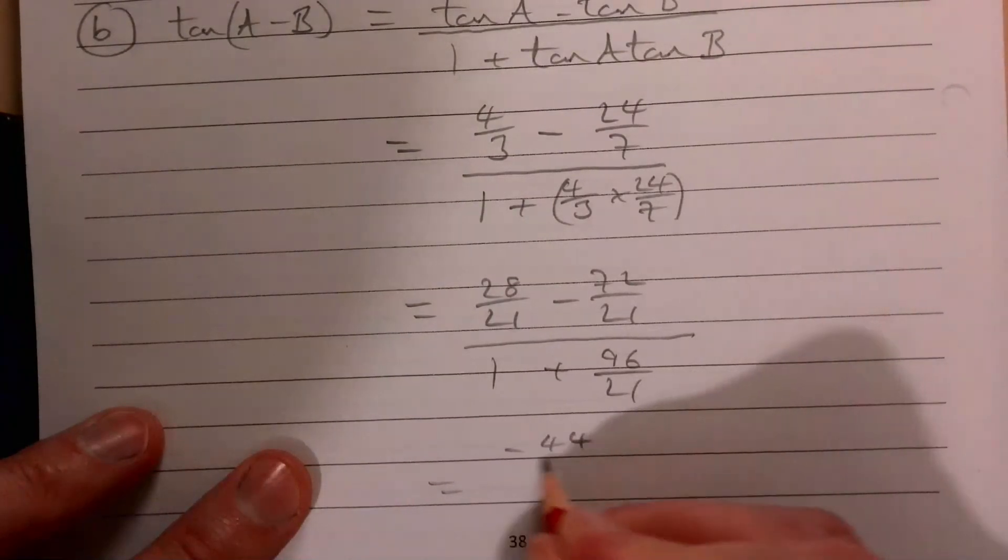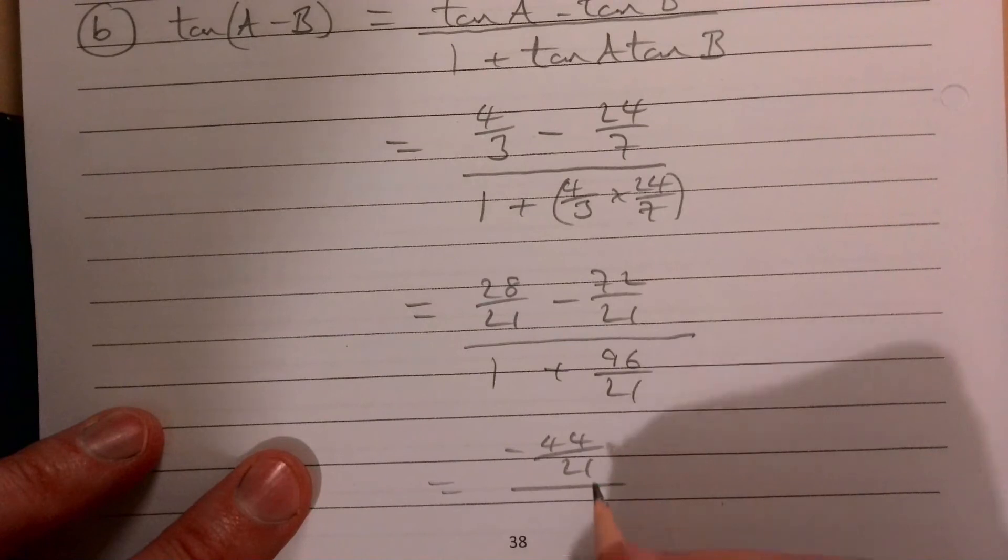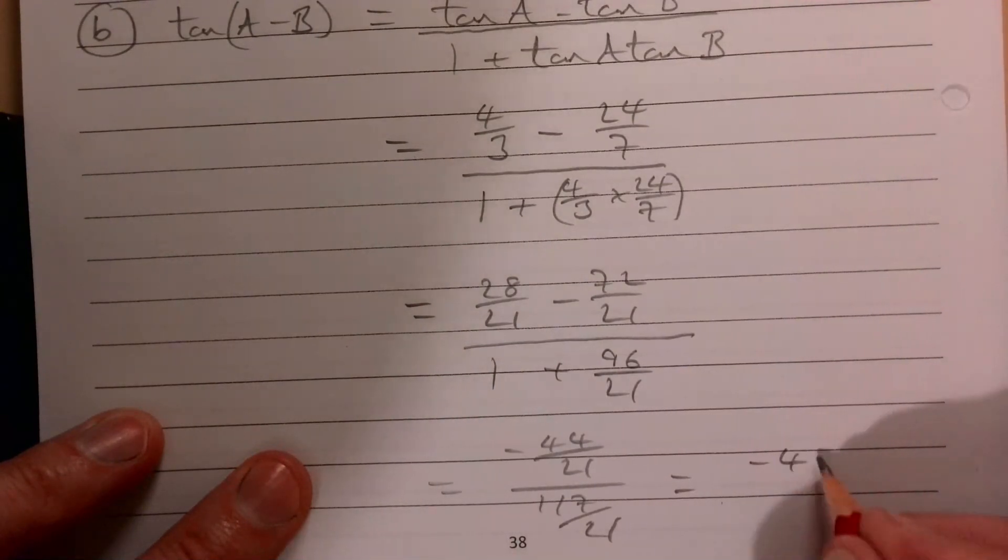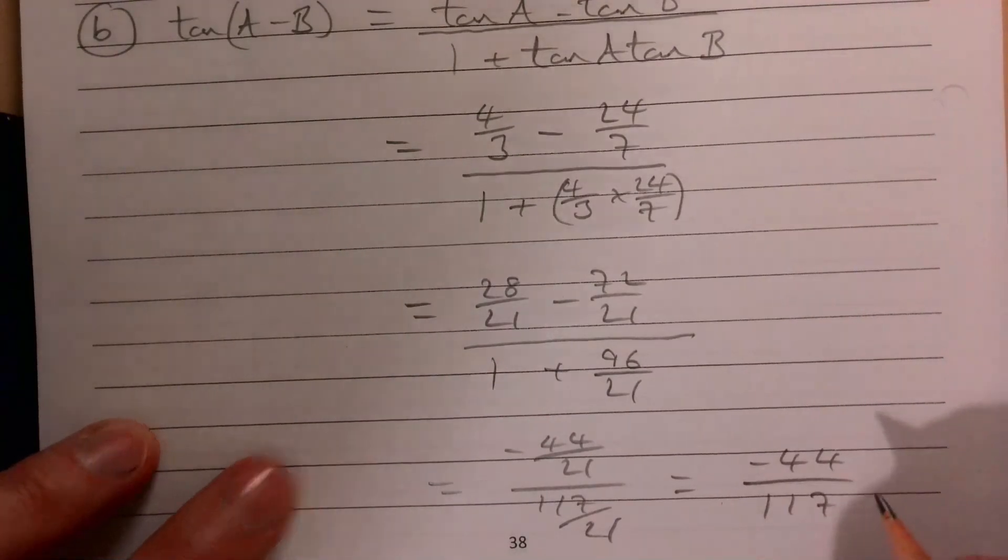Nearly there. Top line then is -44/21, bottom line is 117/21, and that gives us -44/117.